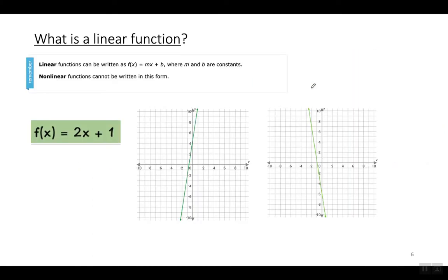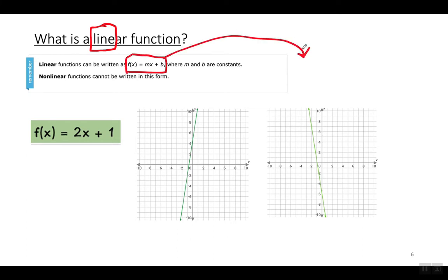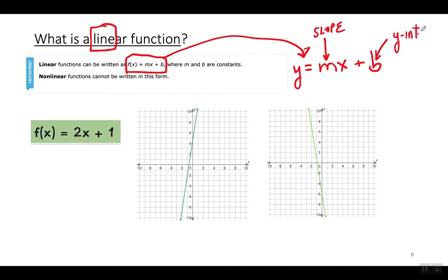What is a linear function? It has the word line in it, so let the name tell you what it means. A linear function is a function that when you graph it, you get a straight line. Linear functions can be written in slope-intercept form. The only difference is that instead of writing y, they're writing it in function notation, but it means the same thing. In slope-intercept form, m is the slope and b is the y-intercept. If the function has anything weird, like exponents or a radical sign, then it is not a linear function.